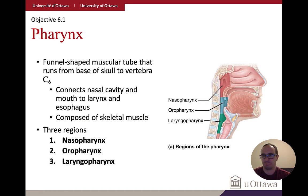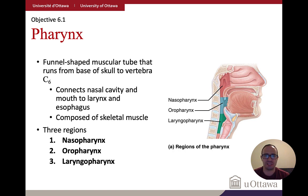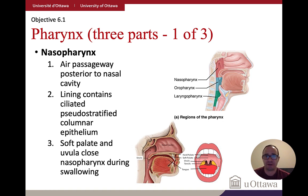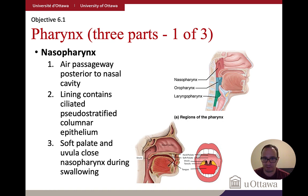After the nasal passage, air travels through the pharynx, a funnel-shaped organ divided into three parts: the nasopharynx behind the nose, the oropharynx behind the mouth, and the laryngeal pharynx. It is mostly composed of skeletal muscle. The nasopharynx is a passageway where air gets warmed and moistened; it contains ciliated pseudostratified columnar epithelium that sweeps debris down toward the digestive system.